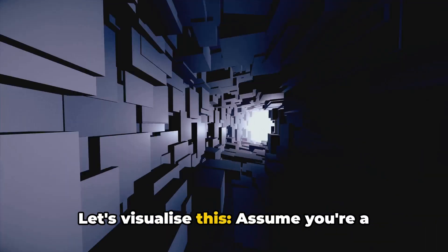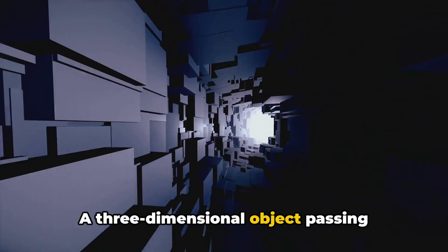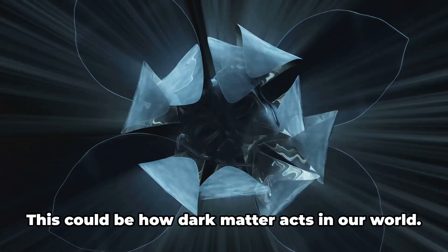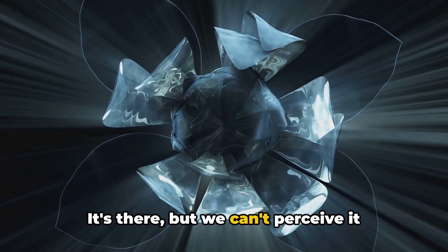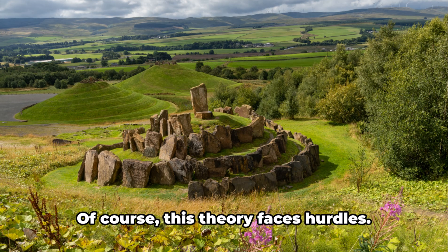Let's visualize this. Assume you're a two-dimensional being on a flat plane. A three-dimensional object passing through your plane would seem to appear and disappear from nowhere. This could be how dark matter acts in our world. It's there, but we can't perceive it because it's interacting with dimensions beyond our comprehension.